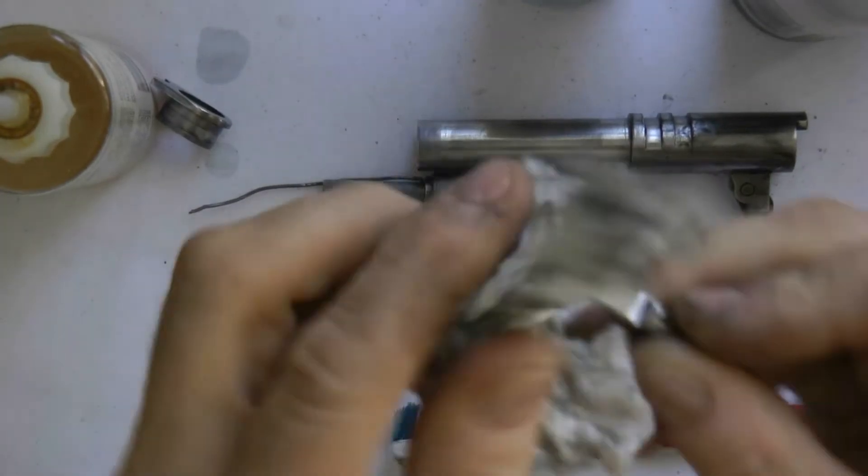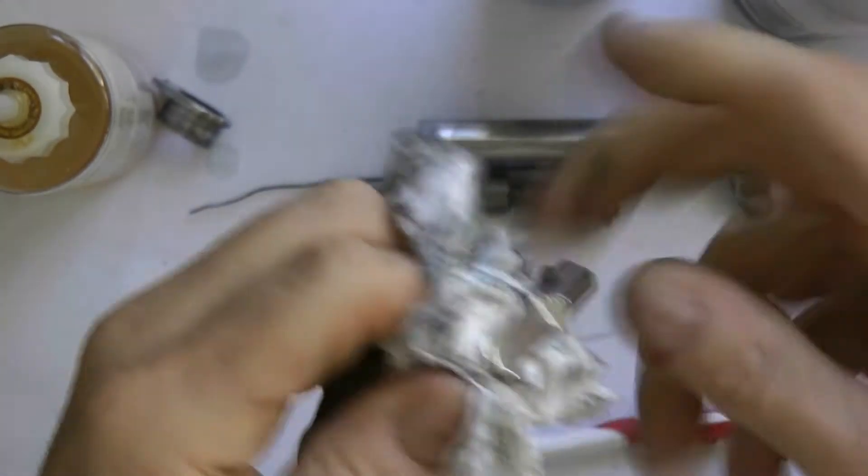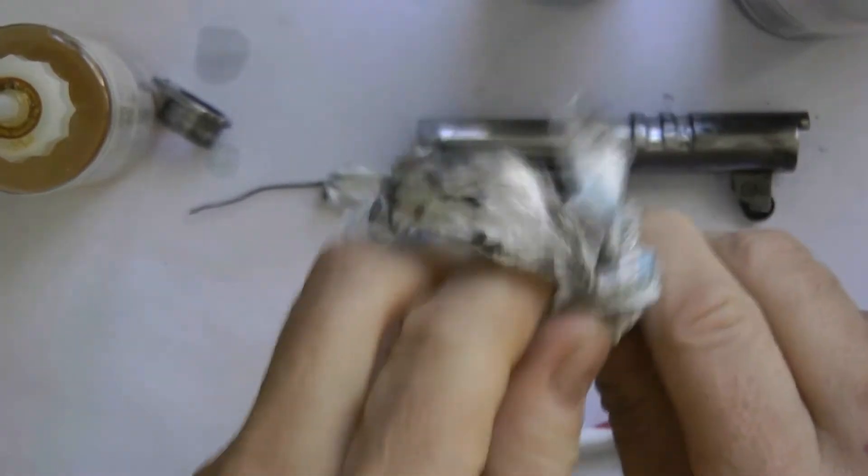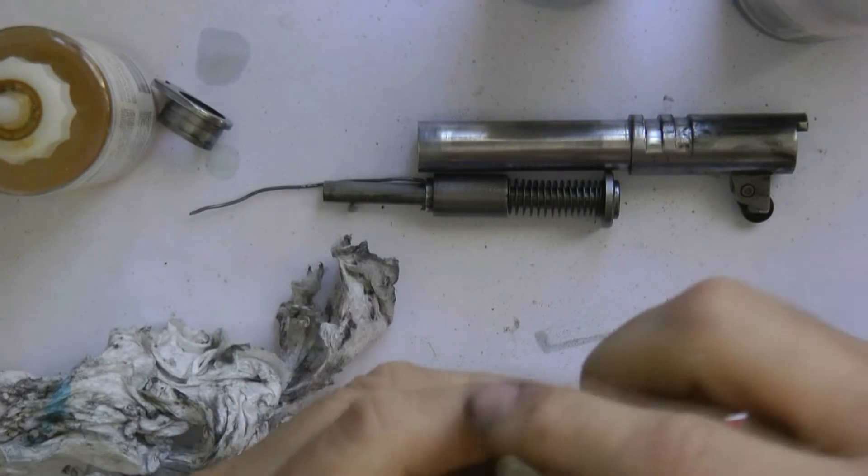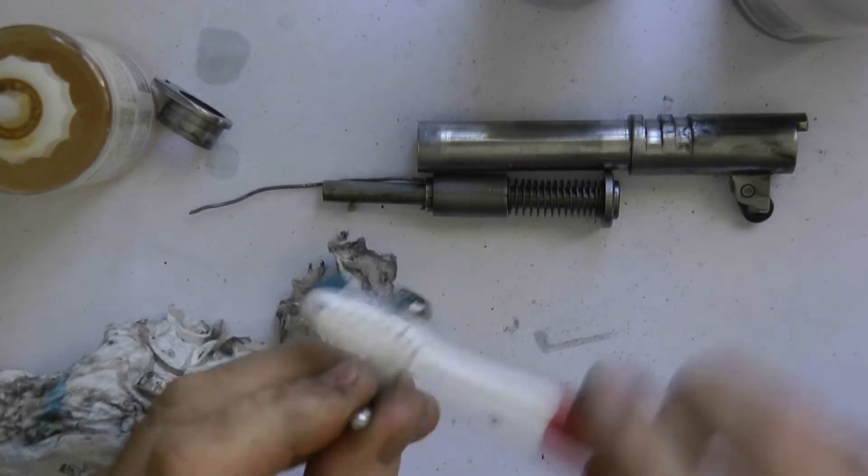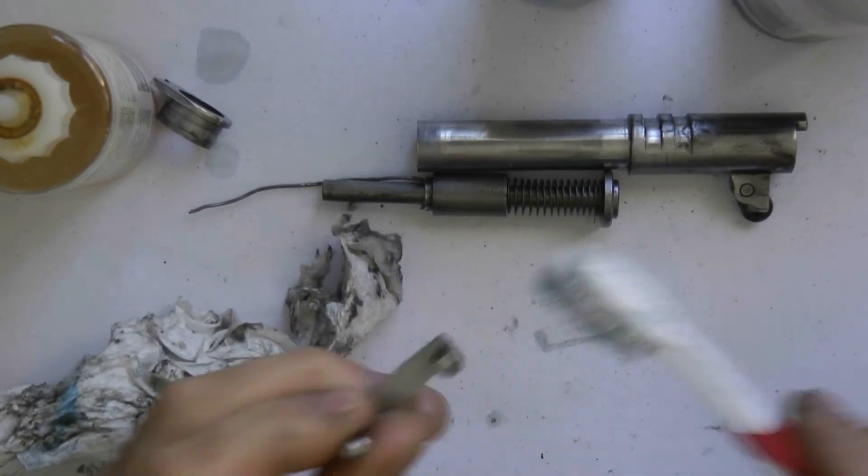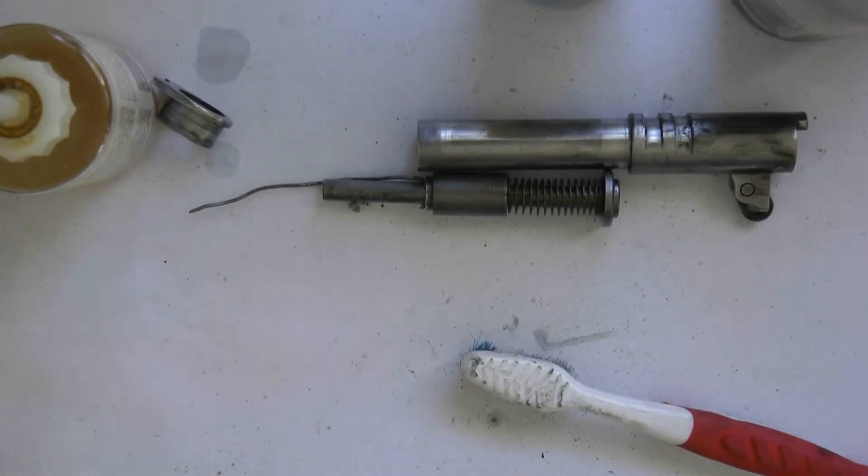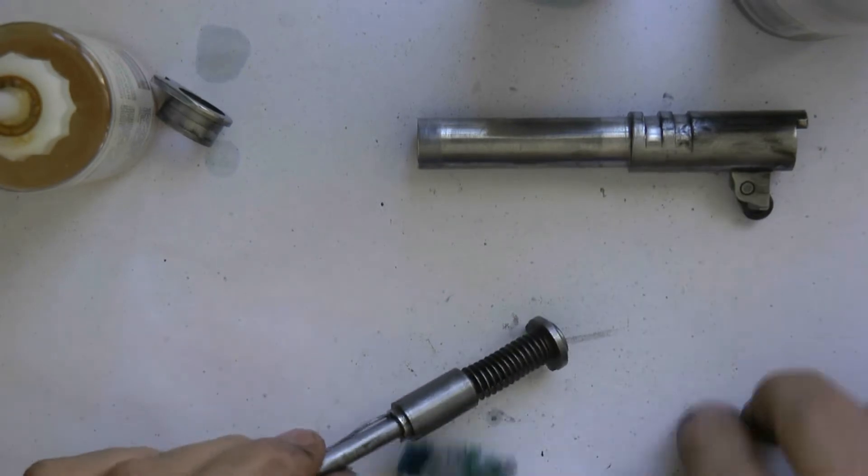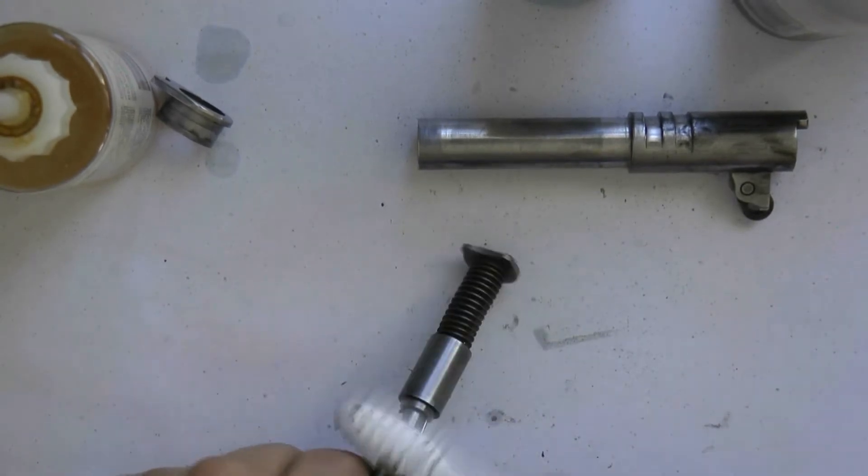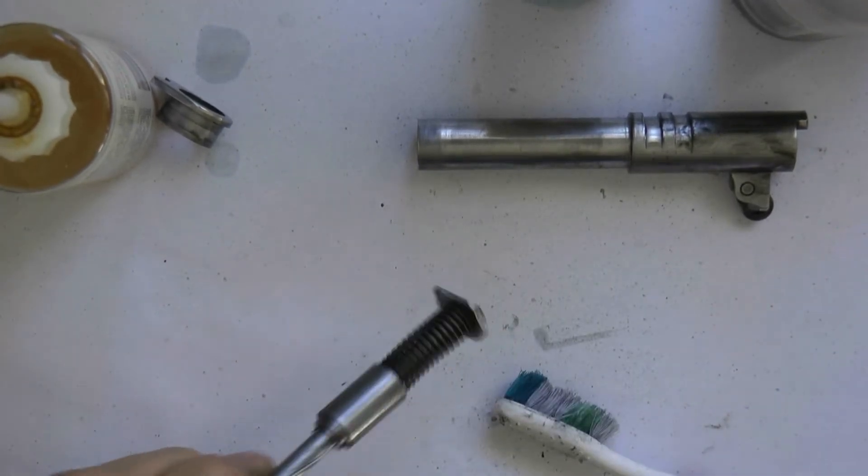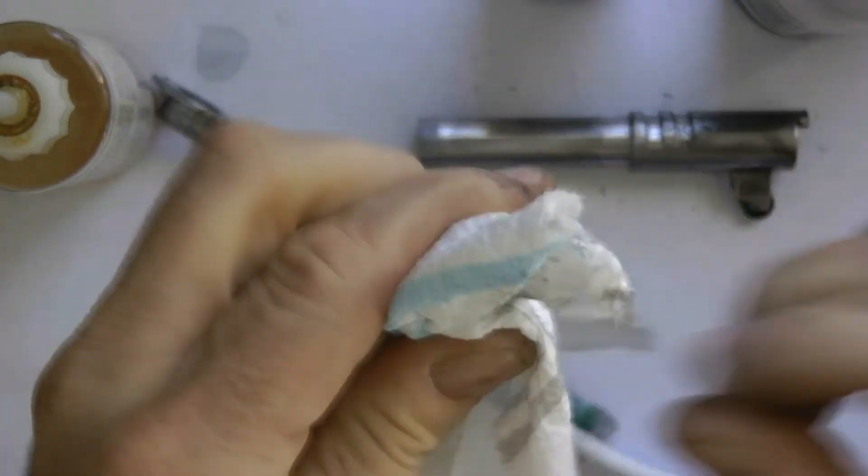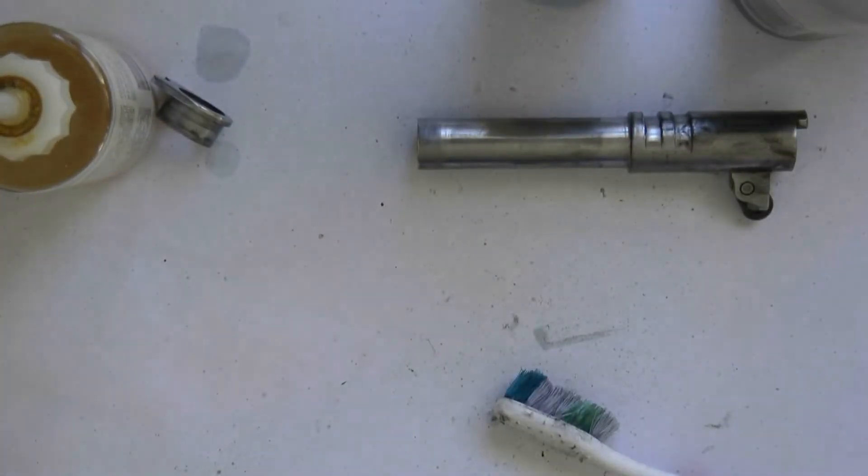Your slide release, just wipe that down there. Any dirt, any carbon. You're going to get a little carbon in there. Toothbrush is a great thing for this, really wipes a lot of stuff off and cleans that up. The recoil spring, you can go over that real quick. Take your paper towel. Let's do our barrel.